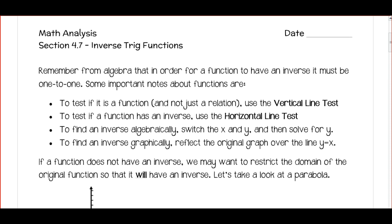In order for a function to have an inverse, it must be one-to-one. Some important things to remember about functions: to test if it's a function and not just a relation, you use the vertical line test. The vertical line test says if you can draw a vertical line anywhere on the graph and it only intersects your curve in one spot, then it's a function. So if we want to test to see if a function has an inverse, we use the horizontal line test.